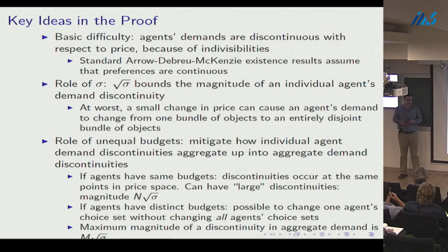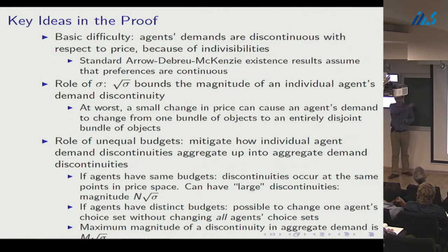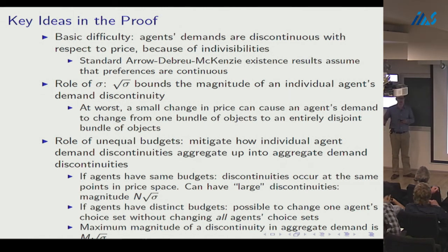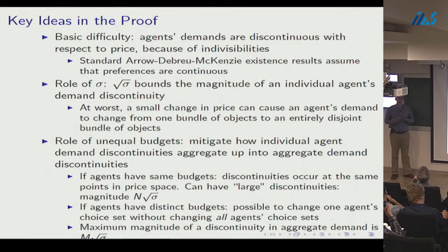The role of unequal budgets in the existence theorem is to mitigate how individual demand discontinuities aggregate. With equal budgets, all agents' choice sets can change at the same price point — budget-constrained hyperplanes are identical — so aggregate demand discontinuity could be as large as n * root(sigma). With distinct budgets, we spread apart these hyperplanes, changing some agents' choice sets without changing all, reducing the maximum aggregate discontinuity to m * root(sigma), where m is the dimensionality of the price space.